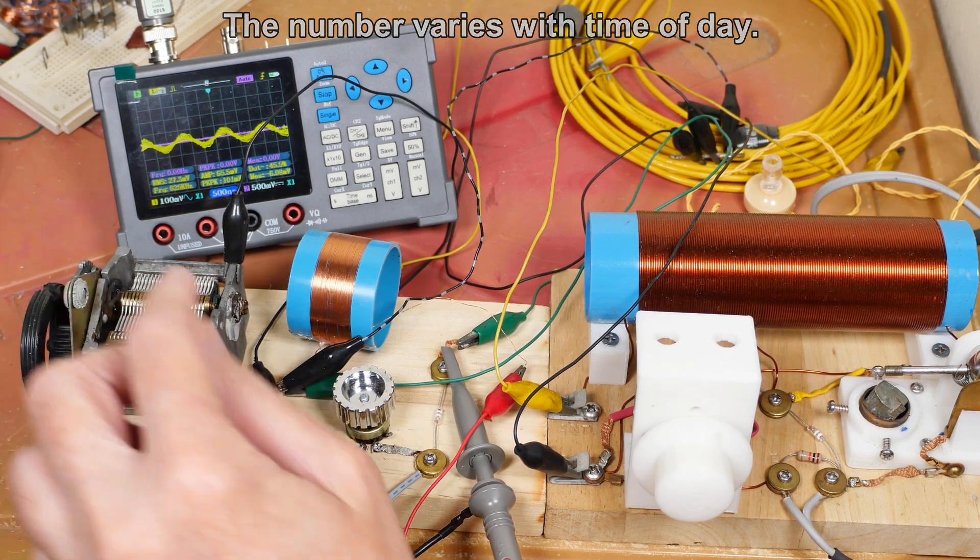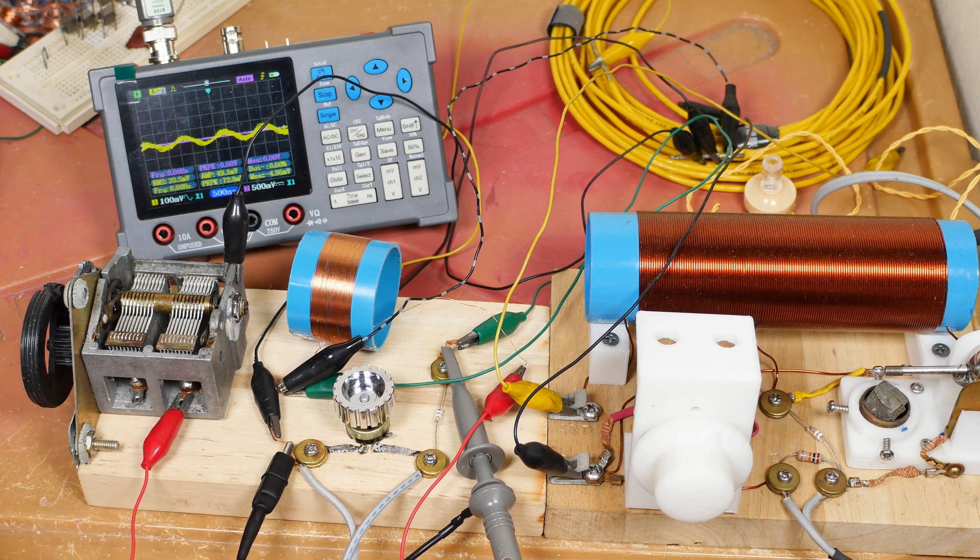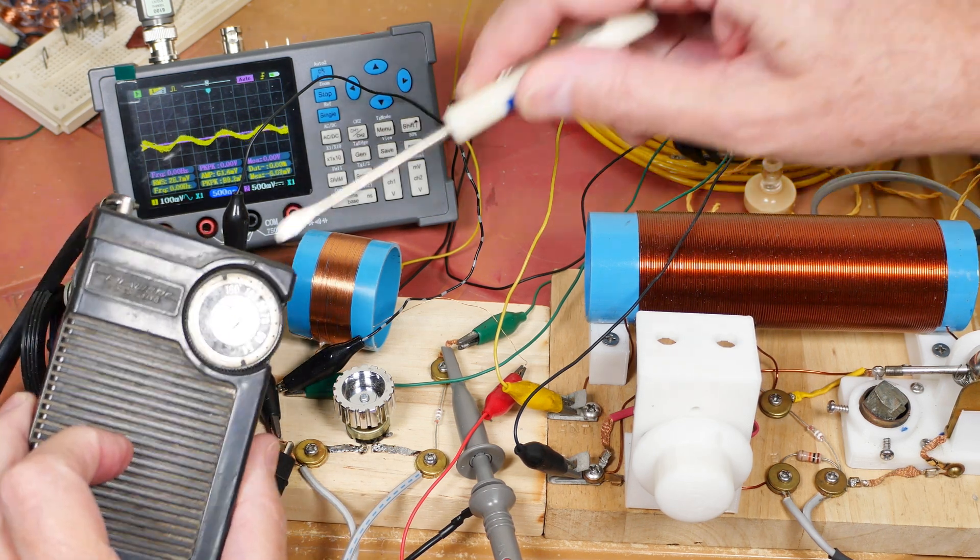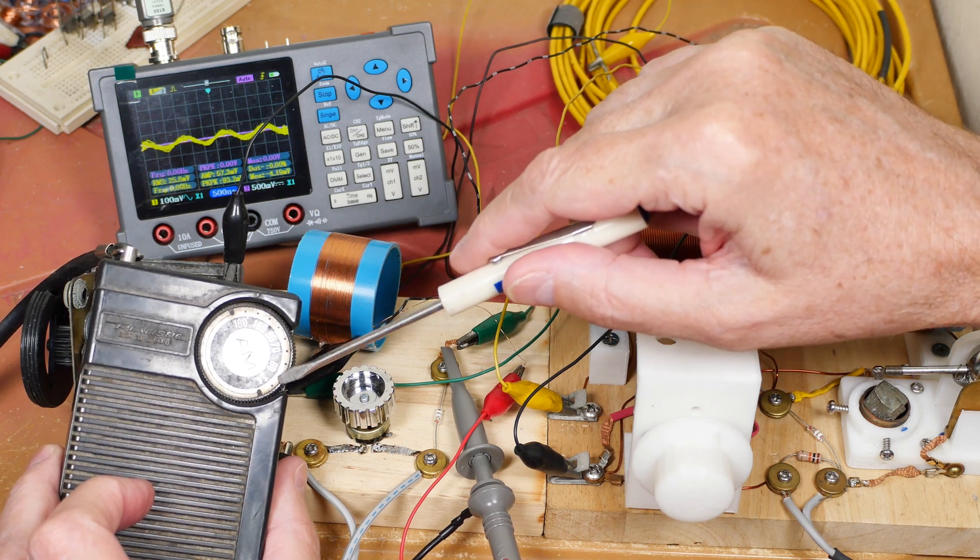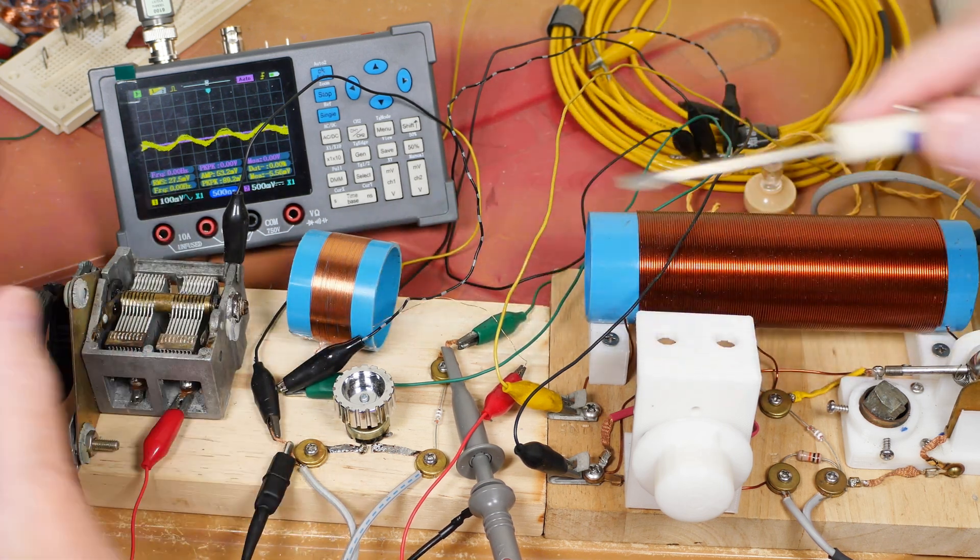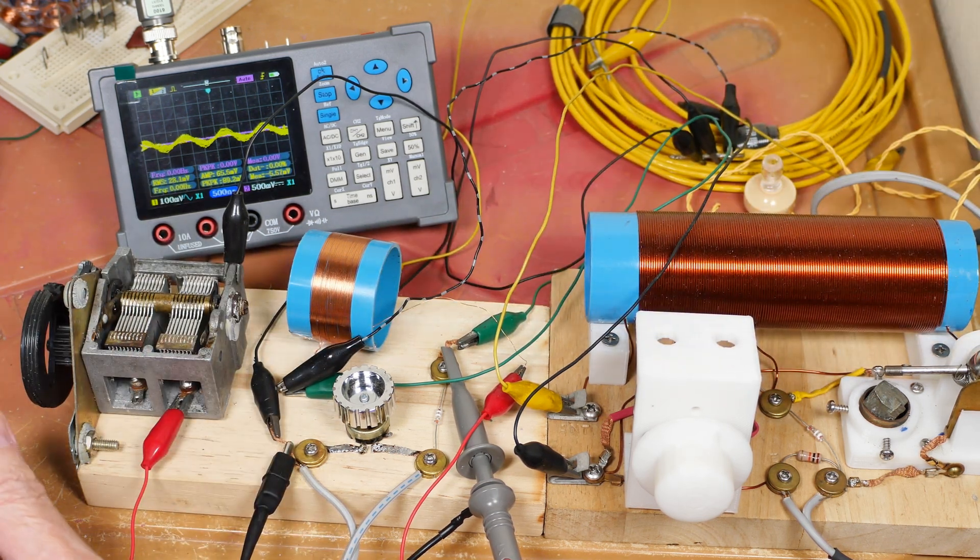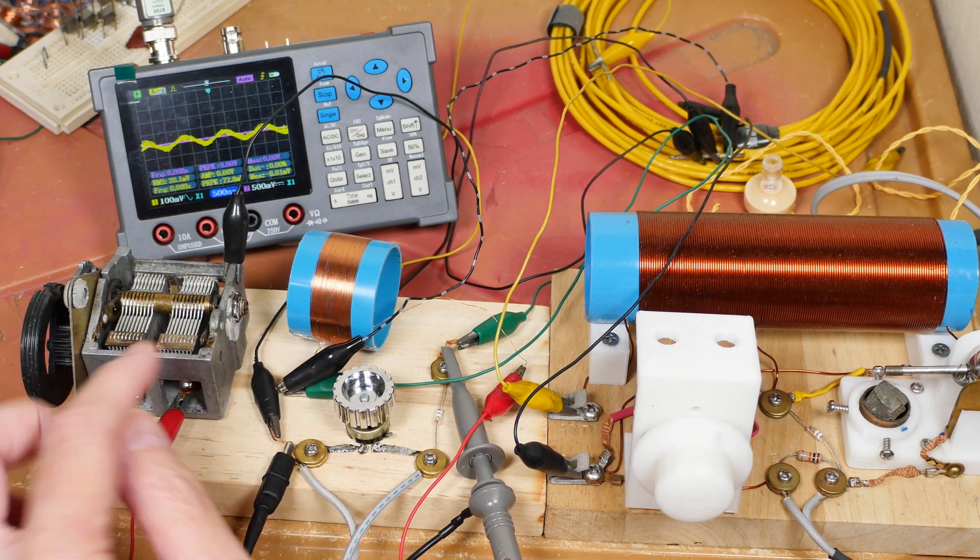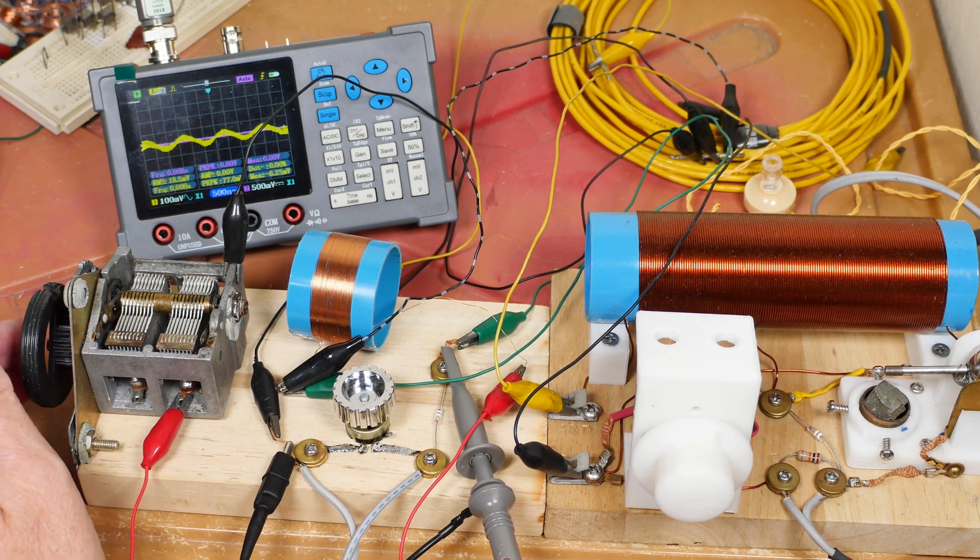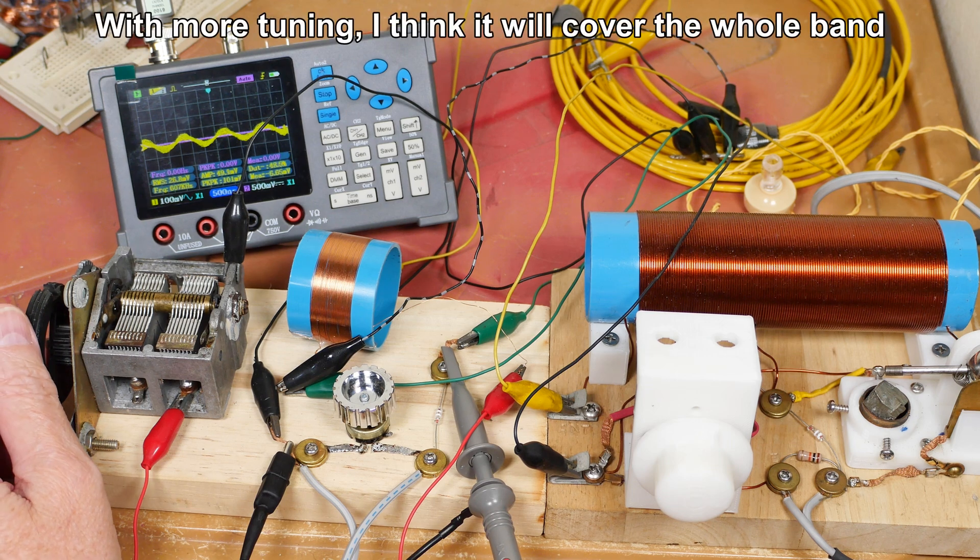And the interesting thing about this coil is it covers on the transistor radio from a little over 100 on the dial to somewhere about 600 kilocycles. So it's not perfect. It probably means I've got too much capacitance and maybe not quite enough inductance. So it's not reaching each range.